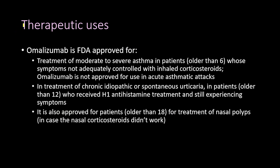Omalizumab is FDA approved for treatment of moderate to severe asthma in patients older than six years whose symptoms are not adequately controlled with inhaled corticosteroids. These patients are classified as Step 4 to Step 5 in GINA guidelines. It is very important to note that omalizumab is not approved for use in acute asthmatic attacks.